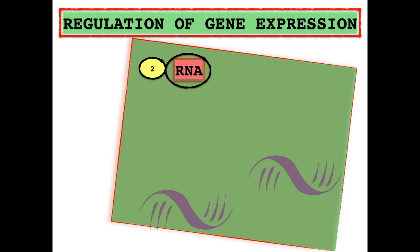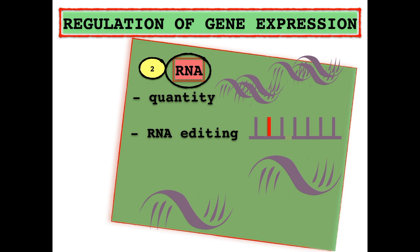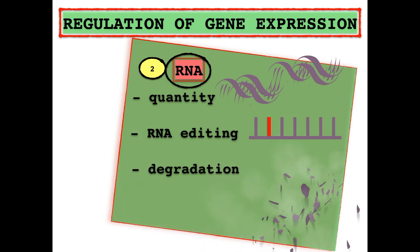On an RNA level, gene expression can be regulated by controlling how many RNA molecules are created or transcribed from one gene. Secondly, the RNA nucleotides can be edited, leading to a changed sequence and a different functional product. Some sections of the RNA molecule can also be removed or added. Lastly, to prevent gene expression, the RNA can be degraded.